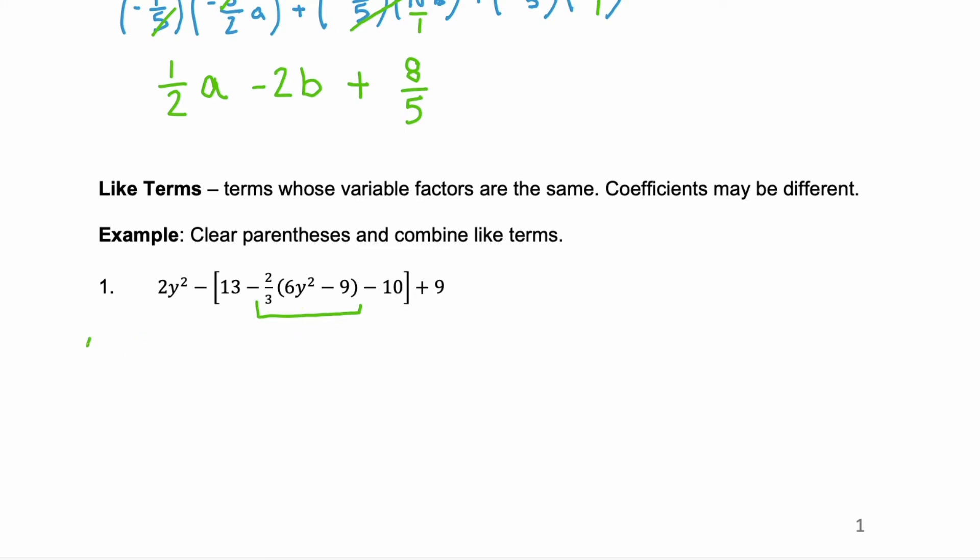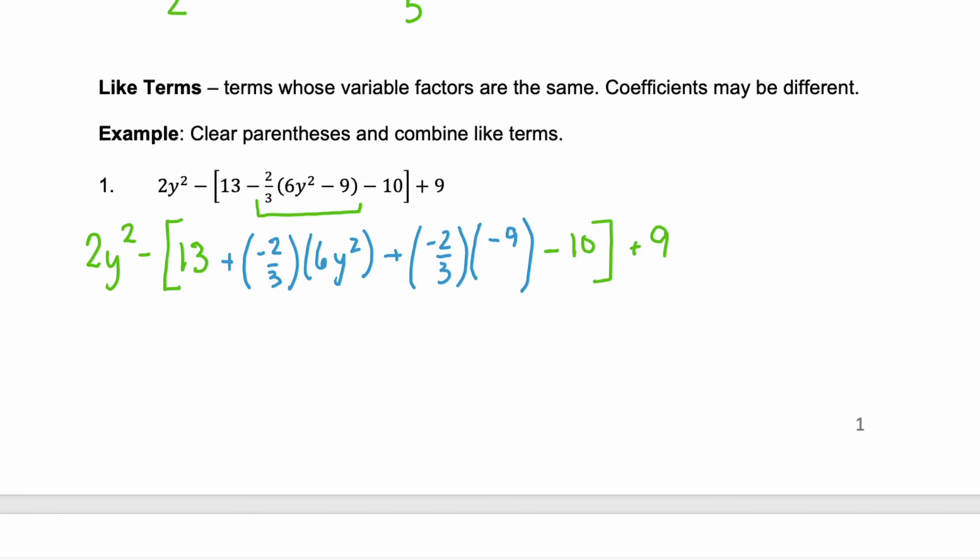So I'm going to copy what's in the front. 2y squared minus that first bracket and the 13. We change colors and we're going to distribute this negative 2/3. So we have negative 2/3 times 6y squared plus negative 2/3 times negative 9. And then we're just going to copy the rest. The minus 10 and the plus 9. We're just going to concentrate on this blue section right now. That's the innermost set of parentheses.